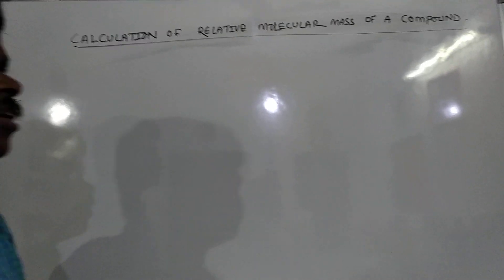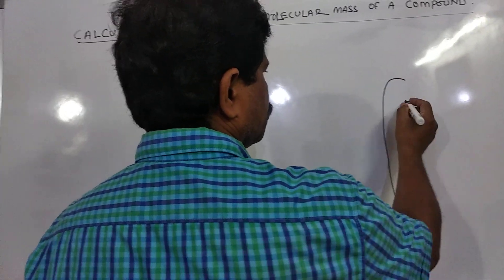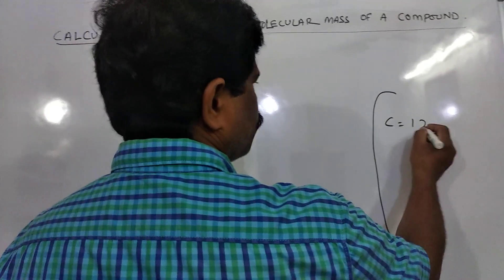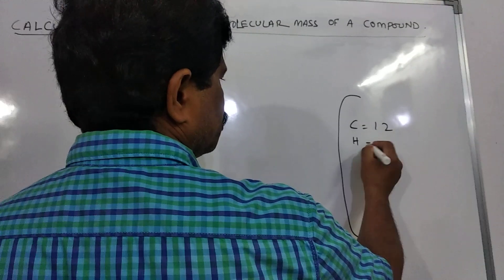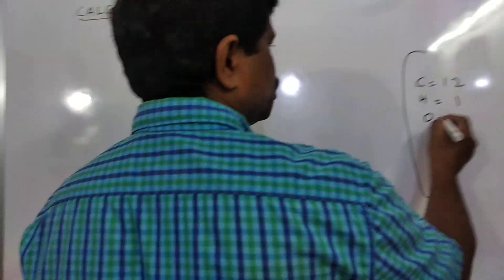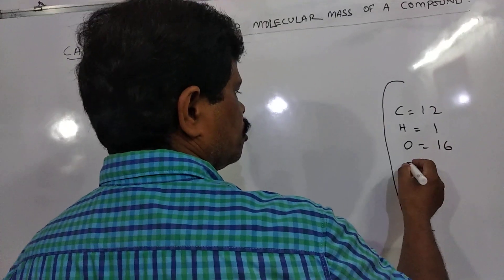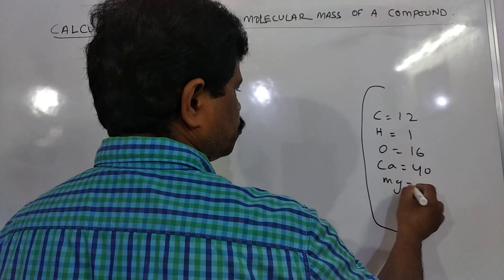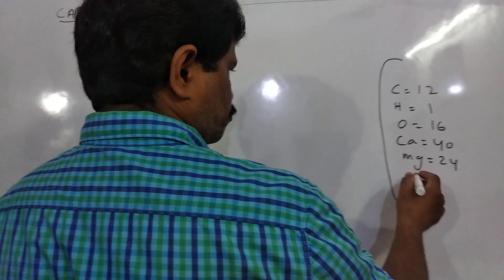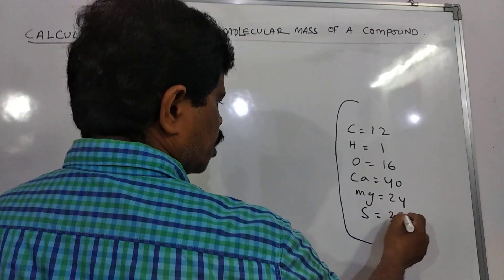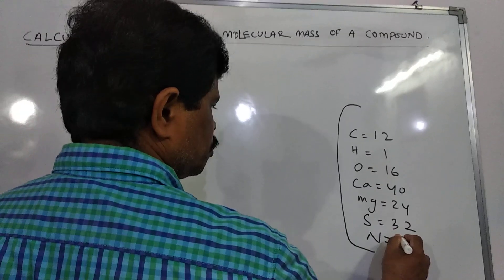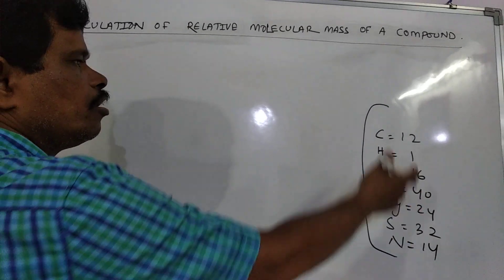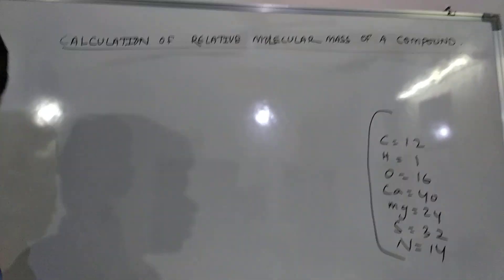Atomic masses of some common elements: carbon is 12, hydrogen is 1, oxygen is 16, calcium is 40, magnesium is 24, sulfur is 32, nitrogen is 40. These are the atomic masses of the element.